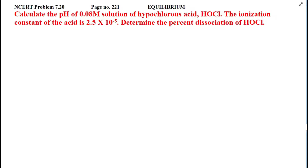Students, this is NCERT problem 7.20 from page number 221 of equilibrium. Calculate the pH of 0.08 molar solution of hypochlorous acid HOCl. The ionization constant of the acid is 2.5 into 10 raise to power minus 5.